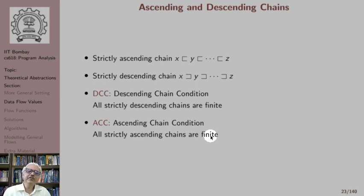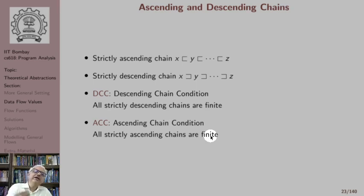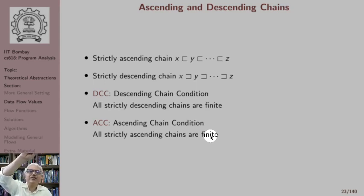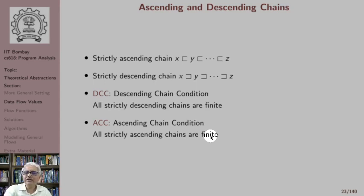The way to visualize this is that if we draw a Hasse diagram, every edge, as we go from an element to the elements below it, gives us a descending chain. When we say every such descending chain must be finite, it means the height of an element from the bottom element must be finite. We should be able to reach this element from the bottom element in a finite number of steps, or from this element to the bottom element in a finite number of steps. Note that the lattice itself may be infinite.